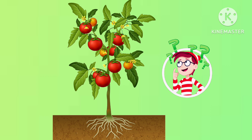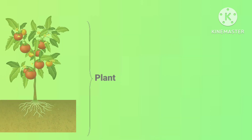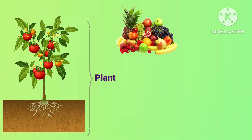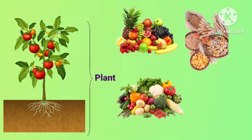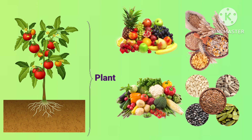Kids, do you know from where do we get these fruits and vegetables? Yes, it is from different plants. Plants provide us food in the form of fruits, vegetables, cereals, grains and seeds. Plants are also living things and they also grow like us. They need air, water, sunlight and soil to grow. Now let's learn about the parts of a plant and their functions one by one.